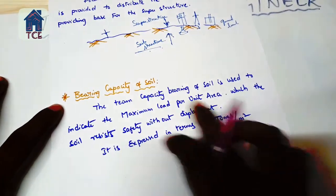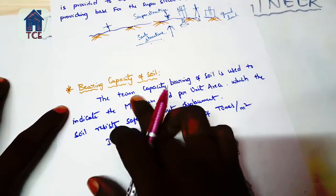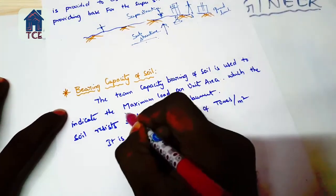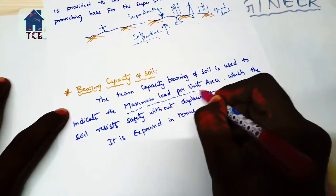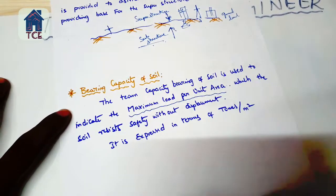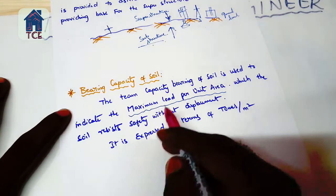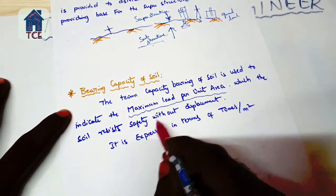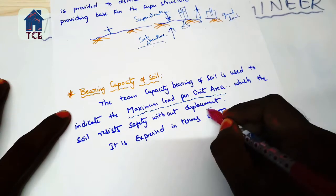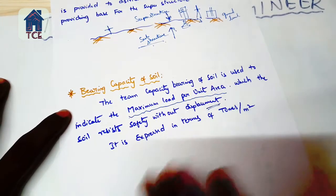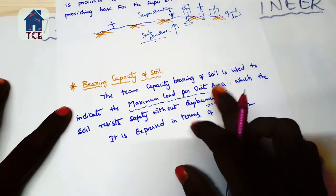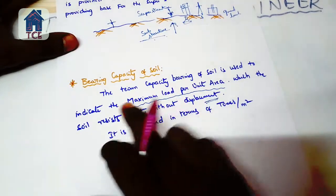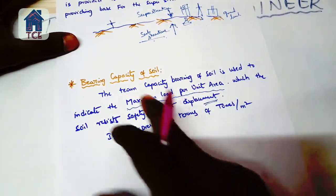Next, bearing capacity of soil is used to indicate the maximum load per unit area. This is the main point - the definition is the maximum load per unit area that the soil can safely bear without displacement.